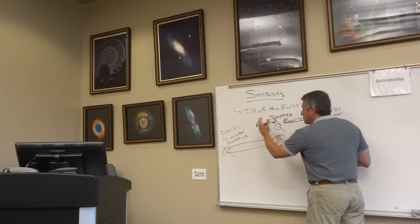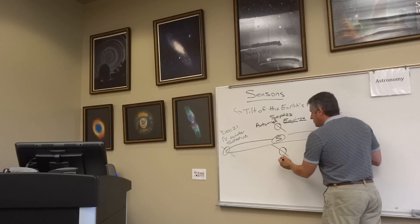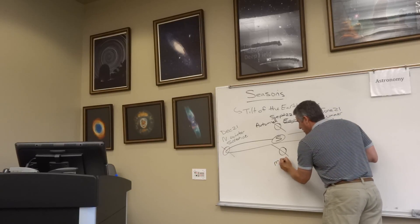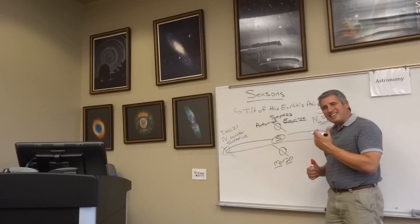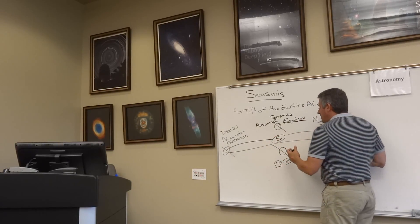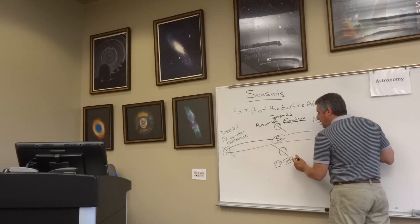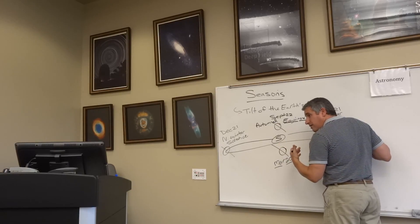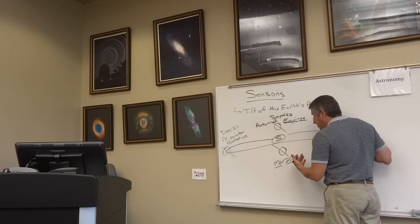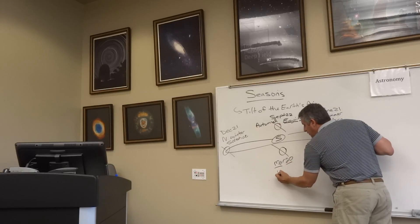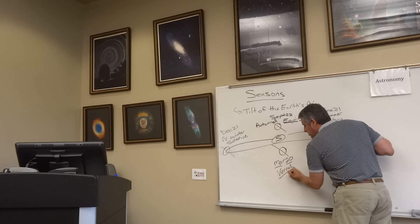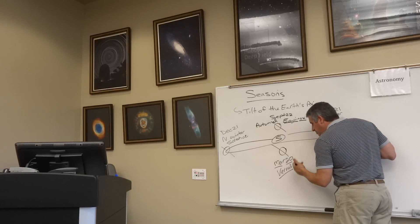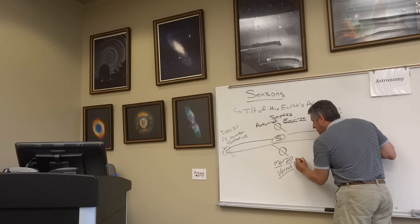As we zoom back around, we come into March 20th — the months aren't all the same length so it varies a little, it's March 20th not the 21st. March 20th is the first day of spring for us in the northern hemisphere, and the first day of fall in the southern hemisphere. That is called the vernal equinox — the word 'vernal' refers to greening, the spring equinox.